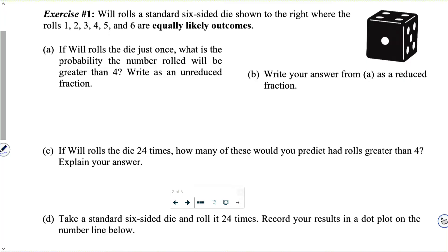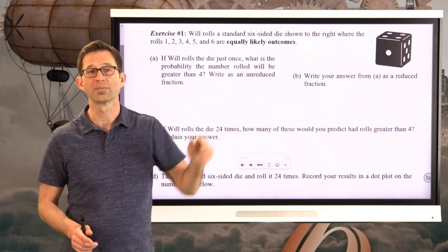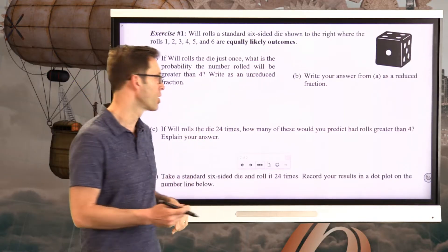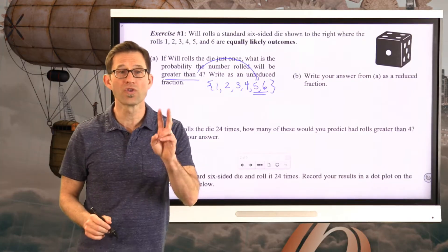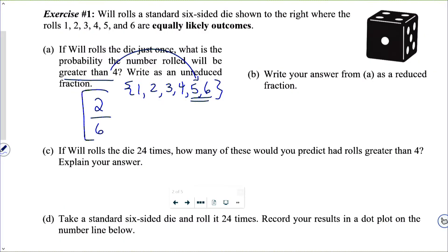Will rolls a standard six-sided die shown to the right where the rolls 1, 2, 3, 4, 5, and 6 are equally likely outcomes. Letter A: If Will rolls the die just once, what is the probability the number rolled will be greater than 4, as an unreduced fraction? This is simple enough. We've got six equally likely outcomes. We want to know the probability that the number Will rolls will be greater than 4. There are two of these outcomes that are greater than 4, so our probability is 2/6.